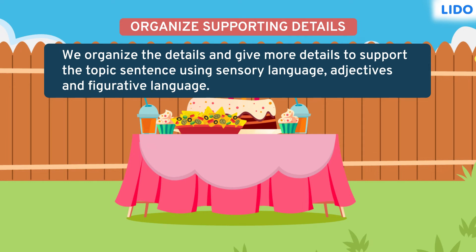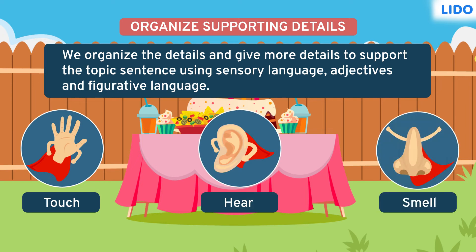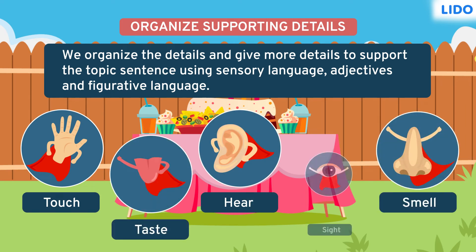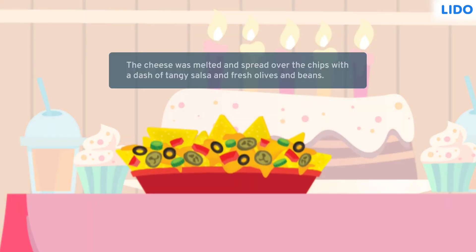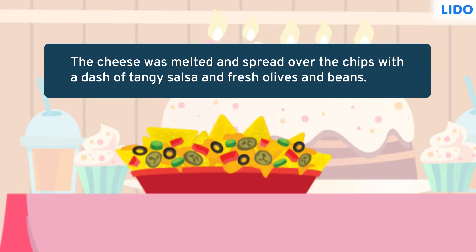Sensory details are the five senses of touch, hear, smell, taste and sight that a writer employs to engage a reader and to help them visualize. Raj stated: the cheese was melted and spread over the chips with a dash of tangy salsa and fresh olives and beans. The details like tangy and fresh gave an exact sensory description of the food.